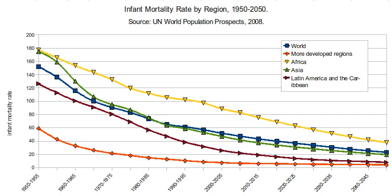Scientists have also discovered three causes within a model called the Contemporary Triple Risk Model. This model states that three conditions — the mother smoking while pregnant, the age of the infant, and stress referring to conditions such as overheating, prone sleeping, co-sleeping, and head covering — contribute to SIDS risk.